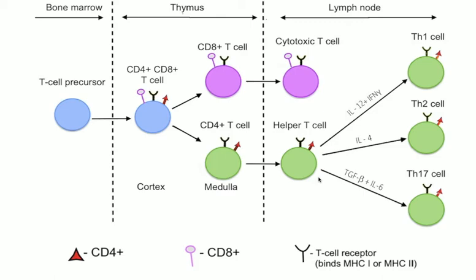T-helper cell differentiation: the main cytokines in T-helper-1 cell differentiation are interleukin-12 and interferon-gamma. Interleukin-4 is the major signaling cytokine involved in T-helper-2 cell differentiation. And interleukin-6 and TGF-beta are the major signaling cytokines involved in T-helper-17 cell differentiation.